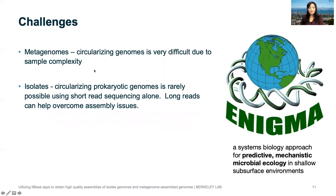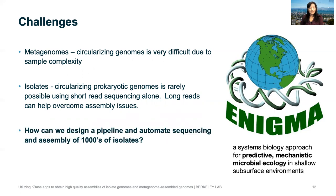The challenges we face: metagenome assembled genomes are very difficult to complete. But even for isolates, it's very difficult because of short read sequencing — you need long reads to help overcome the assembly issues. The task we've given ourselves in Enigma is to design a pipeline and automate the sequencing of these thousands of isolates we're trying to get.